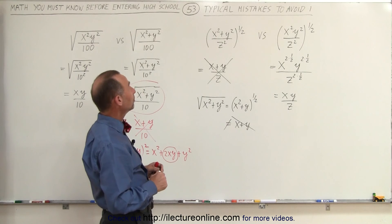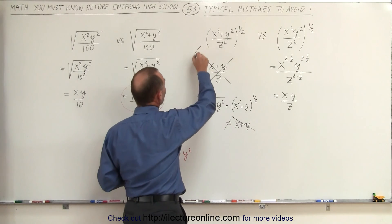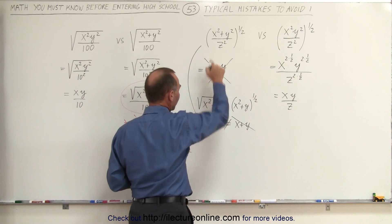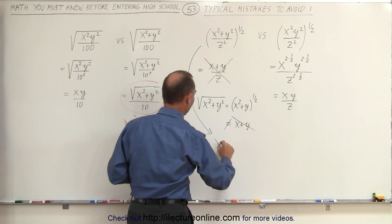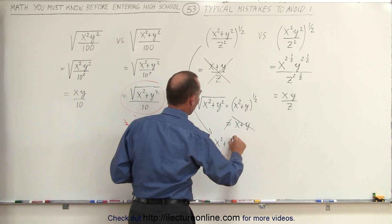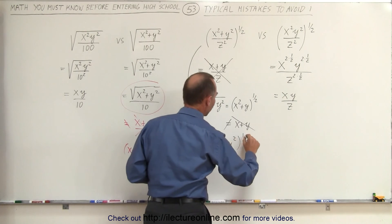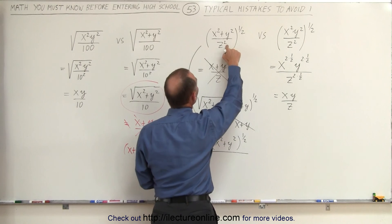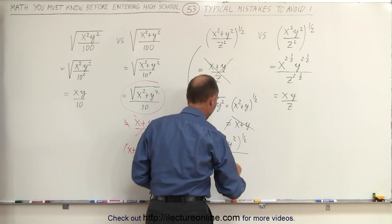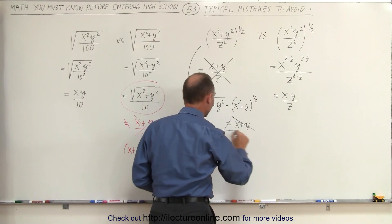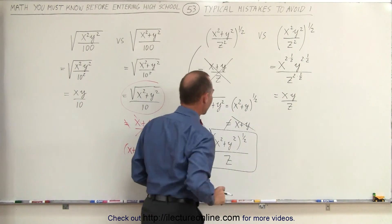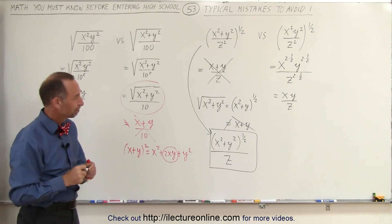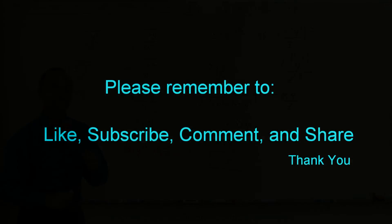Instead, what we should do is realize that only the denominator can be simplified. So this can be written as x squared plus y squared to the one-half power, divided by z squared to the one-half power, which is simply z. And that would be the simplest form in which the quantity can be written. And that's how it's done. Thank you.